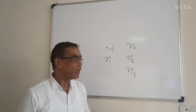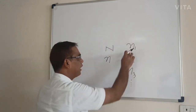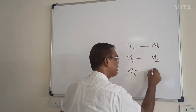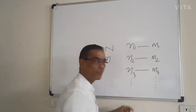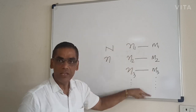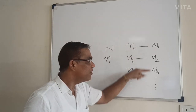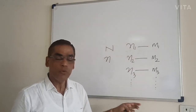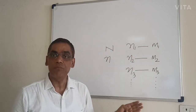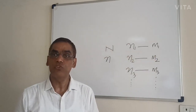Now let us find the measure of each sample. Let us find the mean of n1. Let the mean of n1 be m1, mean of n2 be m2, mean of n3 be m3, and so on. With this, we can get a series of means: m1, m2, m3, mn, and so on. The distribution of means so obtained is called the sampling distribution of mean. If we calculate median, we call it sampling distribution of median. If we calculate mode, we call it sampling distribution of mode. If we calculate standard deviation, we call it sampling distribution of standard deviation.